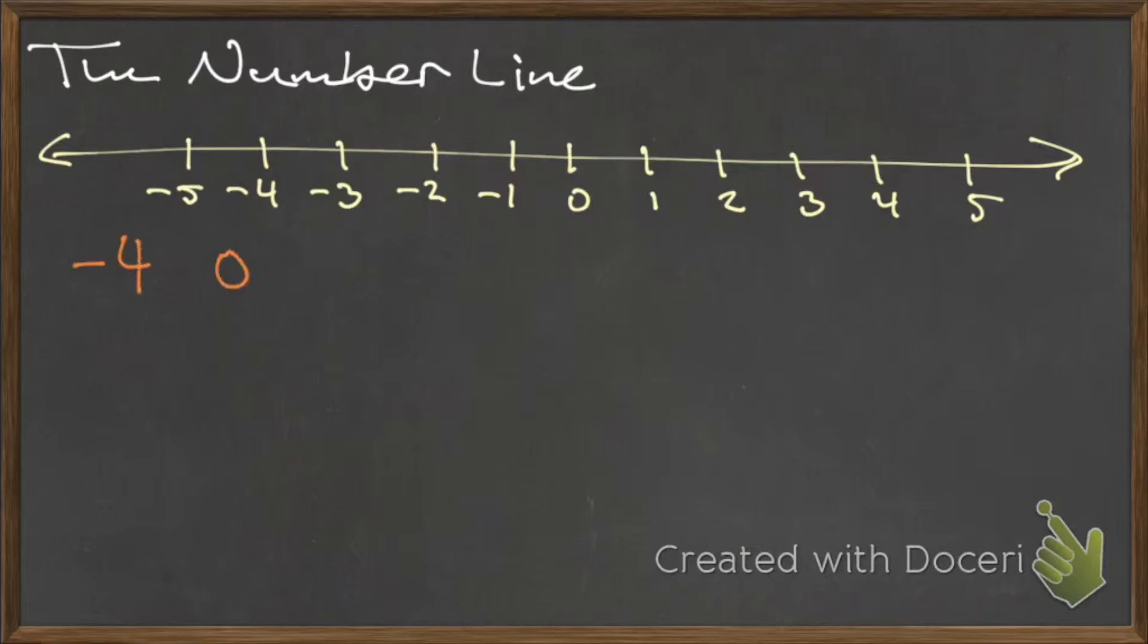For example, if we wanted to compare negative four and zero, we see that negative four is farther to the left than zero on the number line, so we would write negative four is less than zero.